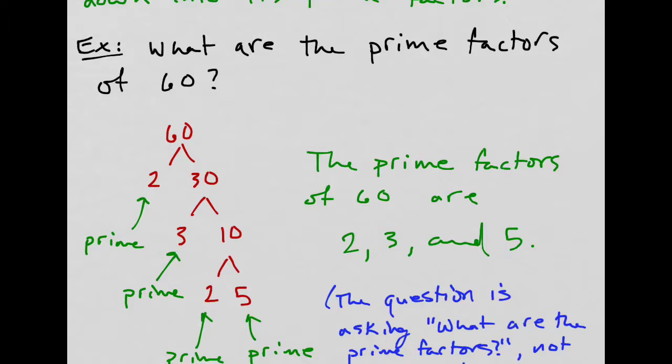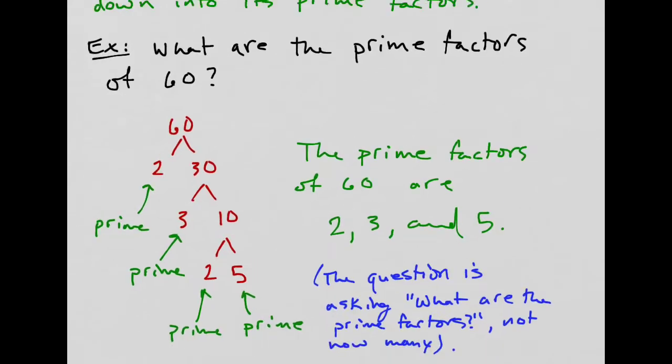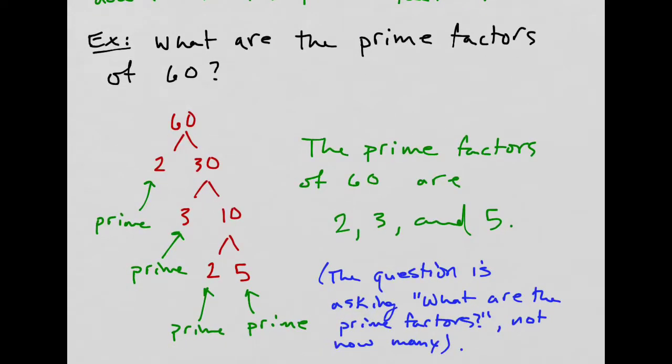If the question said, what is the sum of the prime factors? Well, the prime factors are 2, 3, and 5. If it was asking for the sum, I would get 10. I wouldn't get 12 because it's not asking for the sum of all of the prime factors. It's asking for the sum of the prime factors. It's a little bit of a language thing there. What are the prime factors? There are 2, 3, and 5. So that's the answer to this specific question.